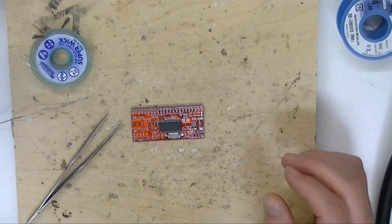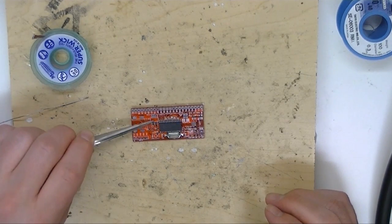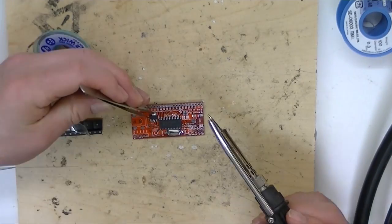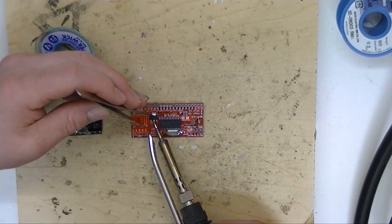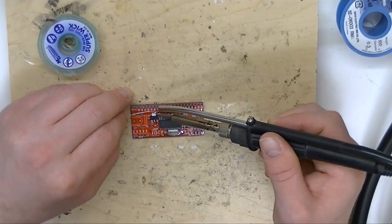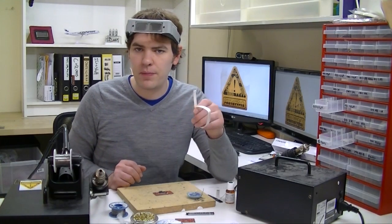Next up we're going to solder on the voltage regulator. That goes right here. Then we're going to add the 0.1 UF decoupling capacitors.